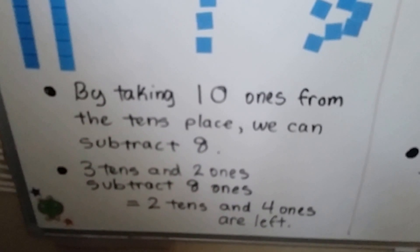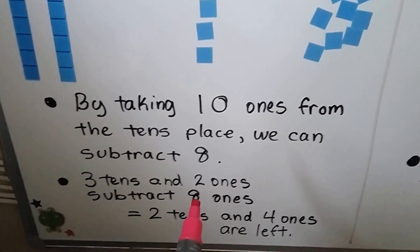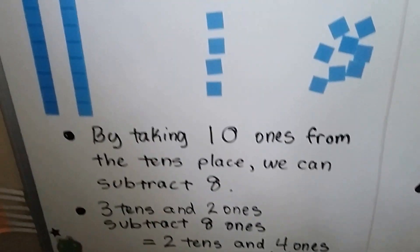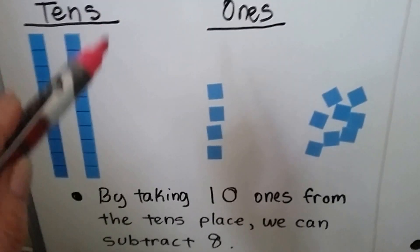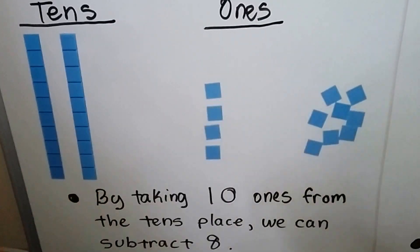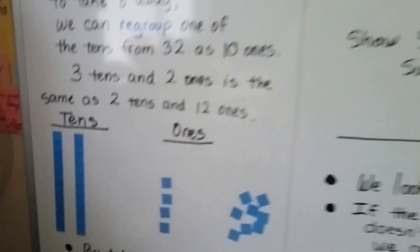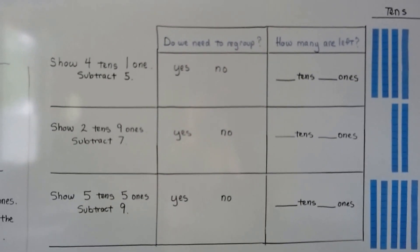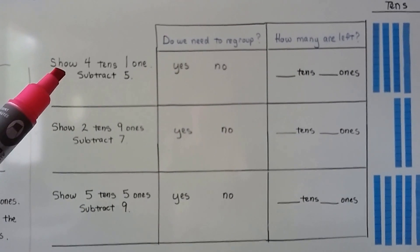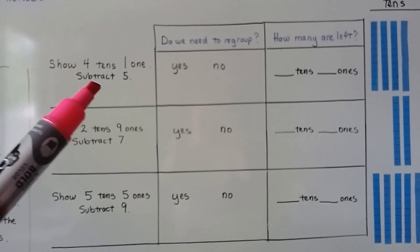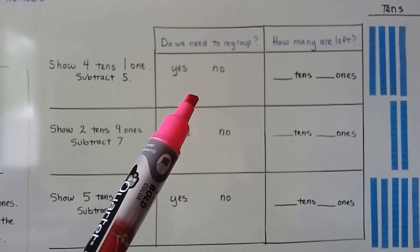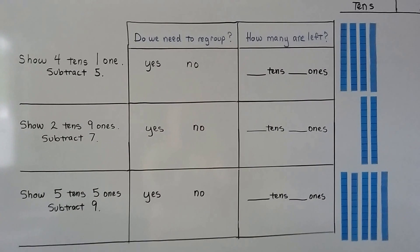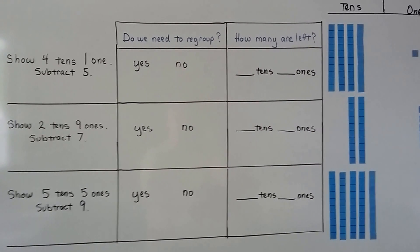We had 3 tens and 2 ones. We wanted to subtract 8. We're left with 2 tens and 4 ones. We took 1 of the tens and broke it apart and gave it to the ones. So here I have a chart. We're going to show some tens and ones and subtract an amount, decide if we need to regroup, and see how many tens and ones are left. We can use models to help us.